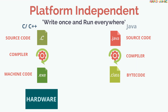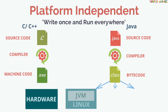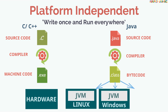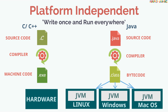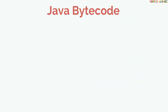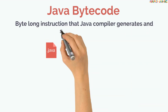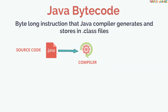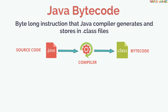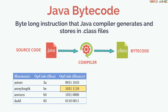This bytecode is distributed over the web and interpreted by the Java Virtual Machine, or JVM, on whichever platform it is being run. Java bytecode is a byte-long instruction that the Java compiler generates and stores in a .class file. It's called bytecode as each instruction in the code is one byte long and can have one or more bytes of operands.